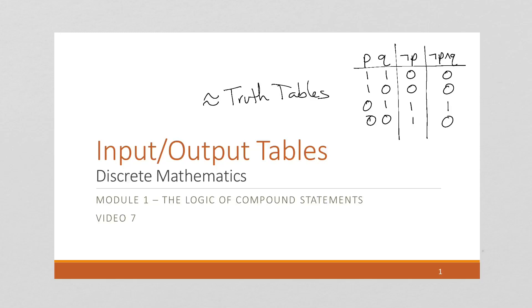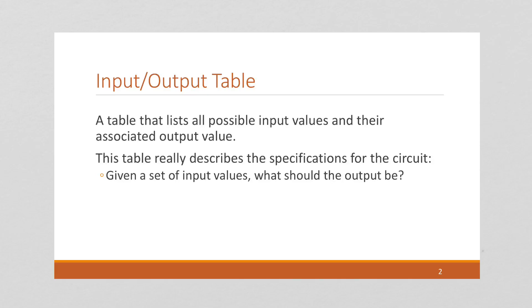An input-output table is similar, except it doesn't bother showing the intermediate steps. And it doesn't usually show the Boolean expression for our output either, it just gives it a name. So we list all possible input values and their associated output values.